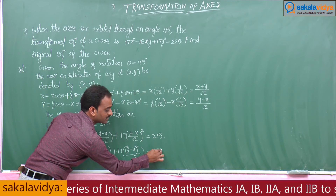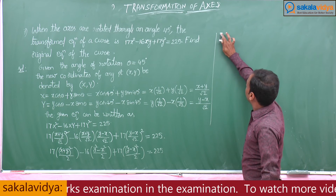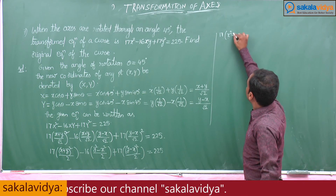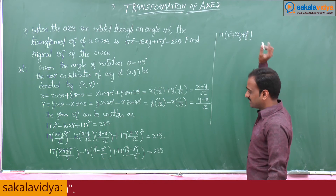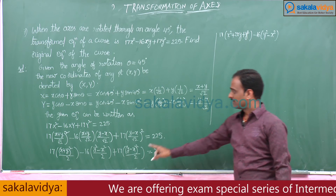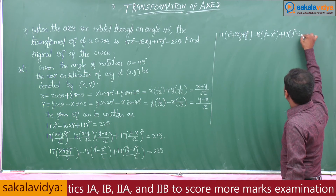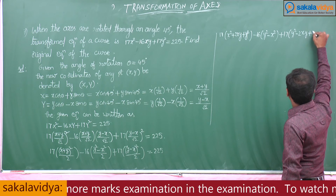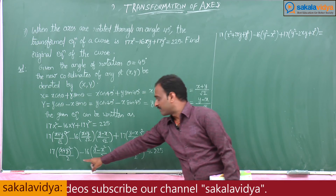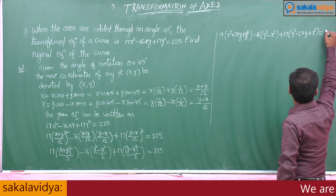This gives 17·(x+y)²/2 minus 16·(y²−x²)/2 plus 17·(y−x)²/2 equals 225. Expanding: 17(x²+2xy+y²) minus 16(y²−x²) plus 17(y²−2xy+x²) equals 225×2, that is 450.